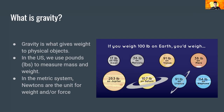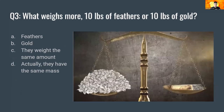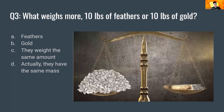Moving on to the third question: what weighs more — 10 pounds of feathers or 10 pounds of gold? The correct answer is that they weigh the same amount because they're both 10 pounds. Weight is just a measure of how strong the Earth pulls on an object. They actually have the same mass because they have the same weight, and since the force of gravity is just a product of mass and acceleration, the amount of weight and mass is exactly the same.